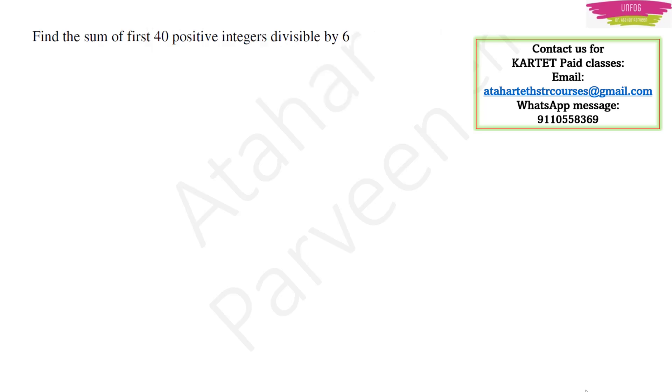Now let us see the first expected question from this chapter. The question is find the sum of first 40 positive integers divisible by 6. In this type of a question, first you need to make the arithmetic progression. They have not given arithmetic progression in the question, but they are given as clue that we have to find the sum of first positive integers divisible by 6.